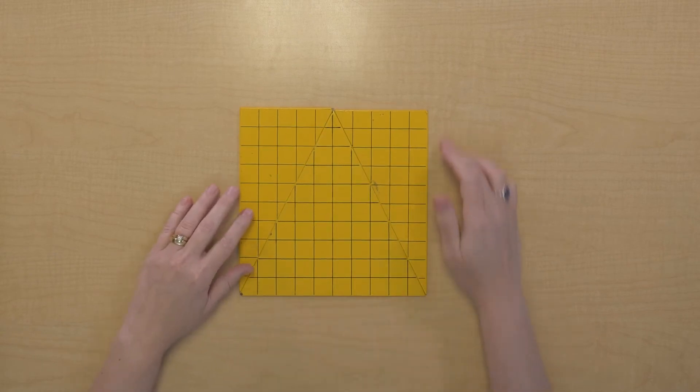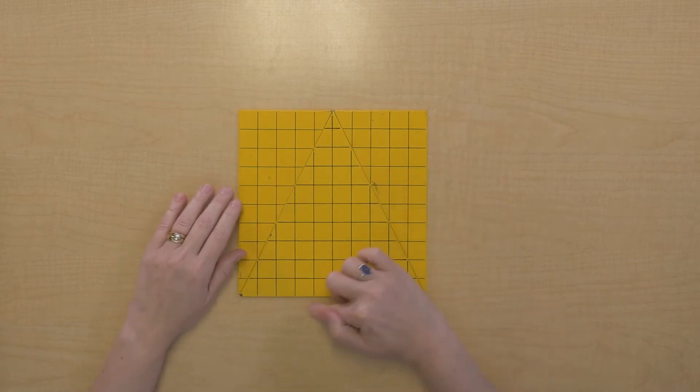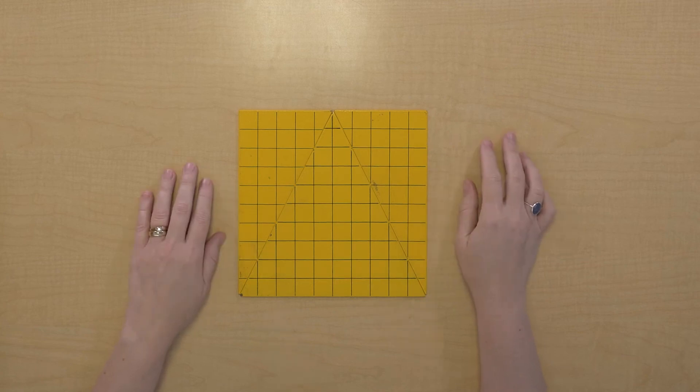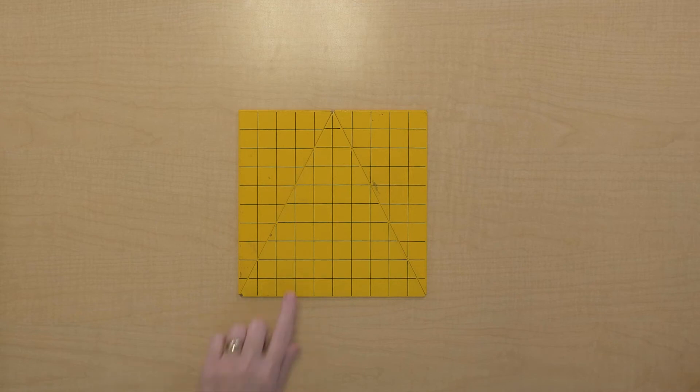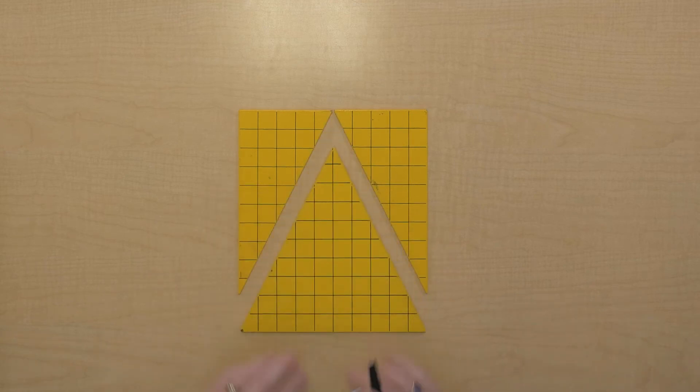So if the base times the height here, if our 10 times 10 gave us 100 square units and we only wanted to find half of that, then the area of this triangle would be 50 units squared.